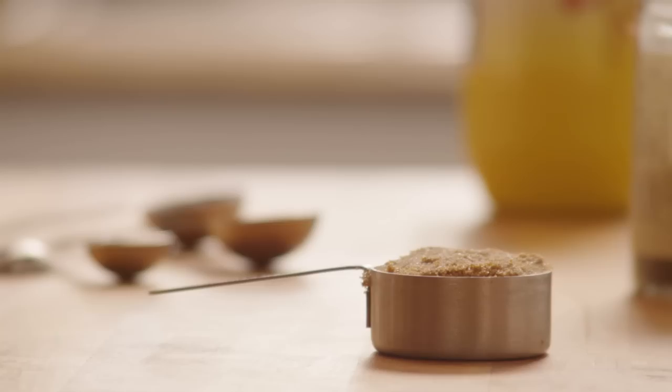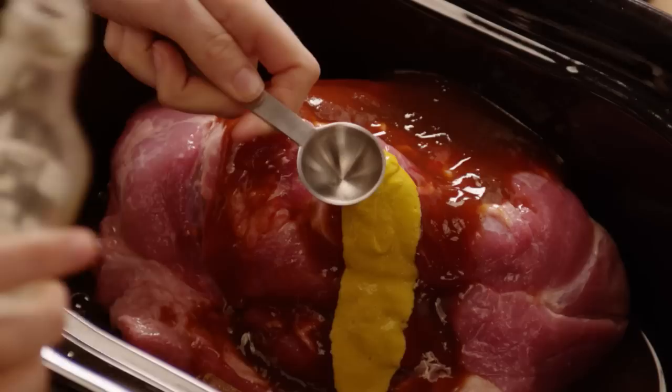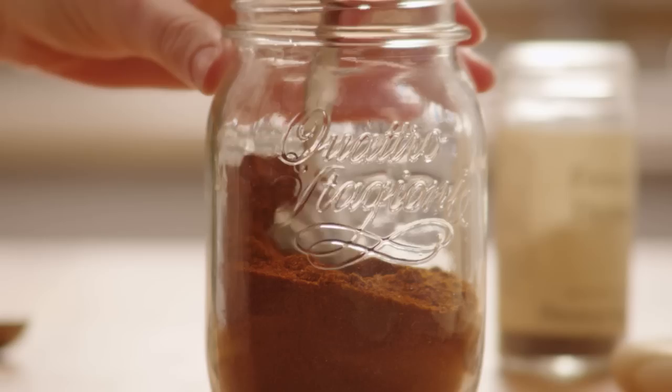Add a quarter cup of packed light brown sugar, a tablespoon of yellow mustard, a tablespoon of Worcestershire sauce, and a tablespoon of chili powder.